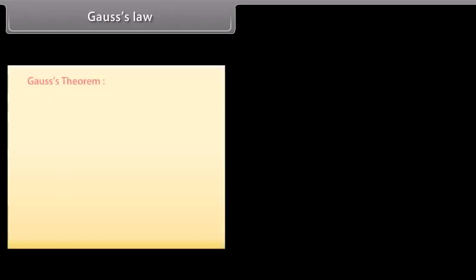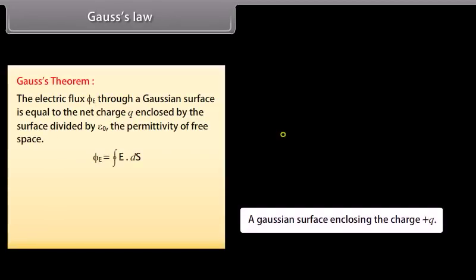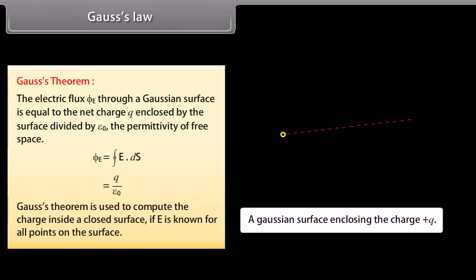Gauss's law (Gauss's theorem): the electric flux ΦE through a Gaussian surface is equal to the net charge Q enclosed by the surface divided by ε₀, the permittivity of free space. Gauss's theorem is used to compute the charge inside a closed surface if E is known for all points on the surface.